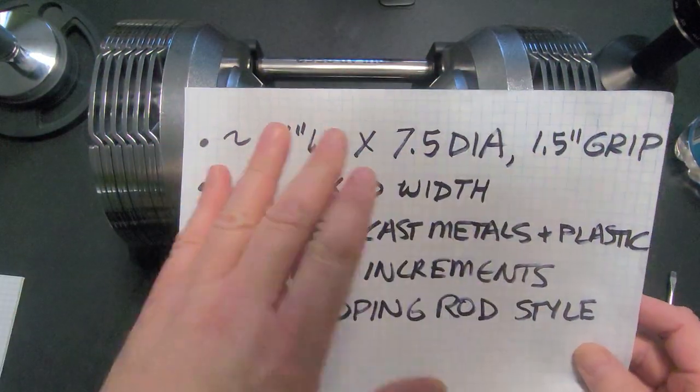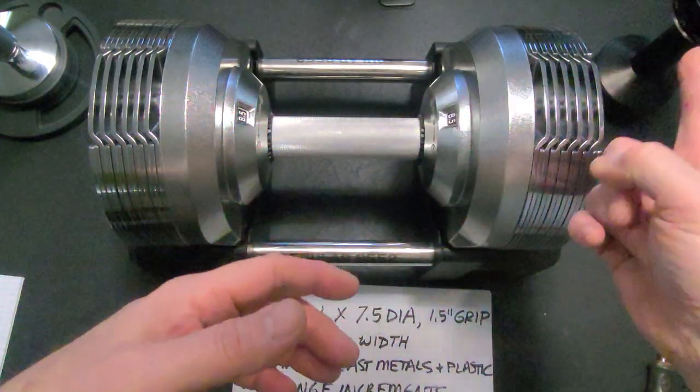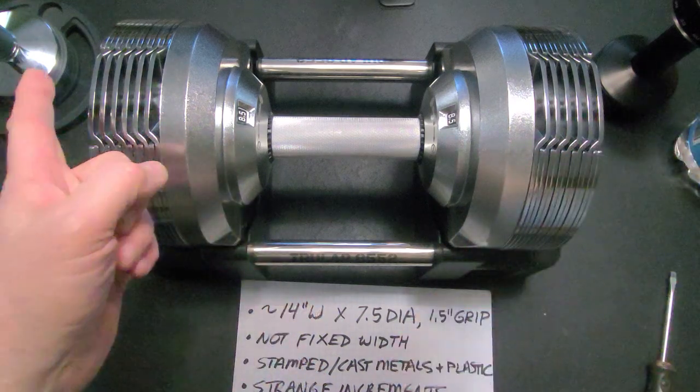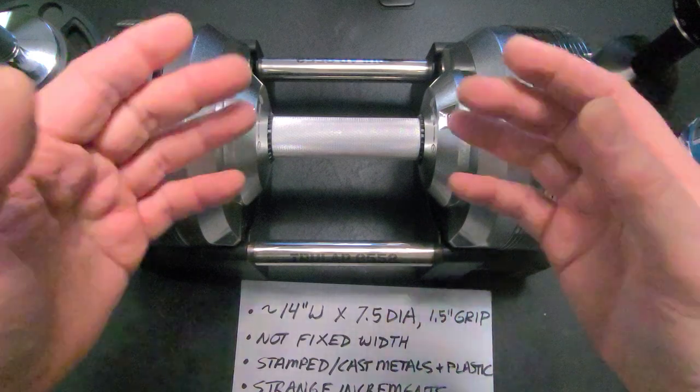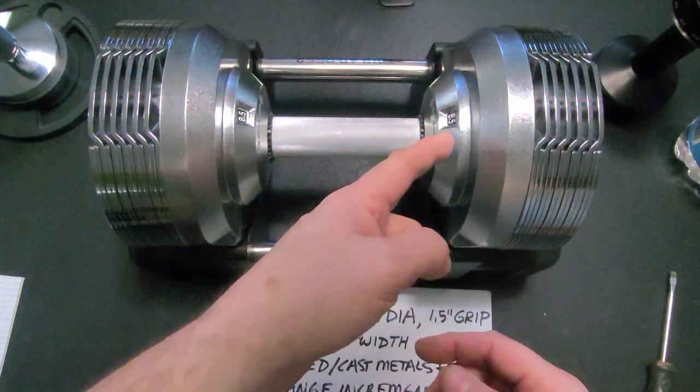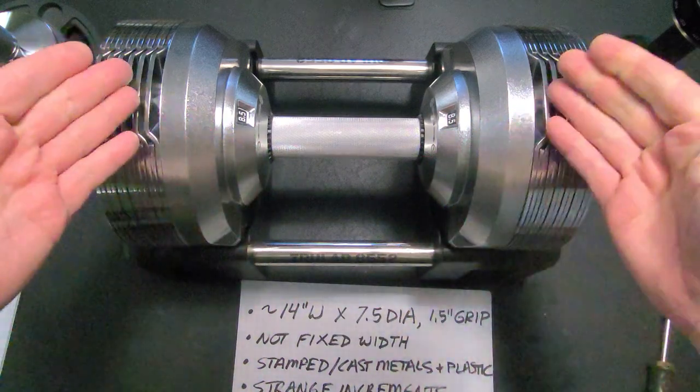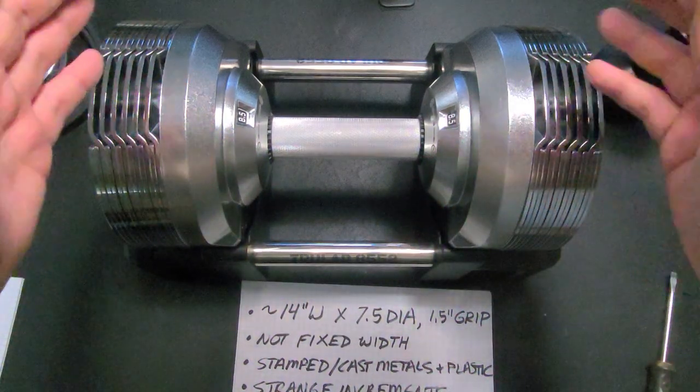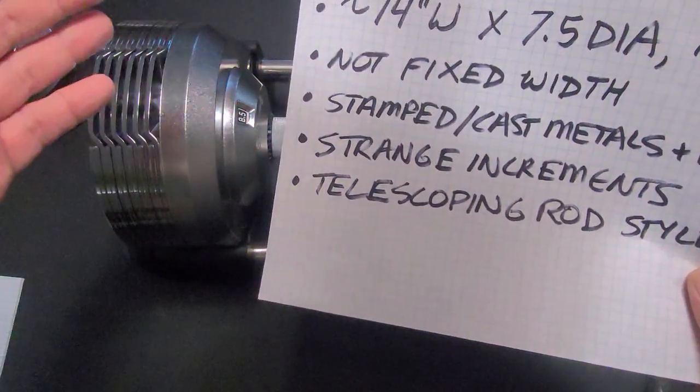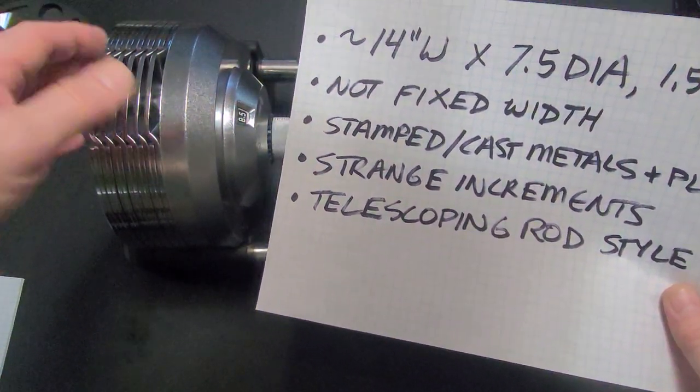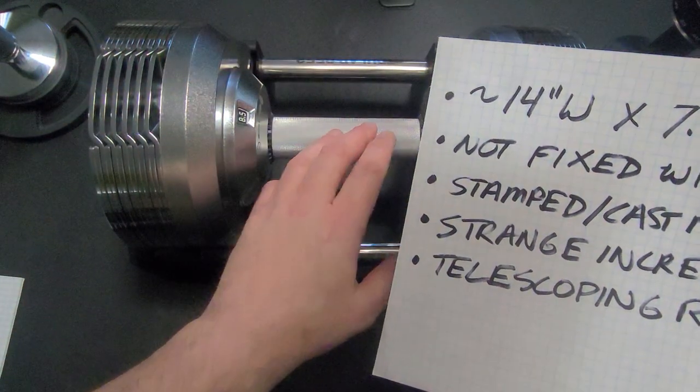It is not a fixed-width dumbbell. It uses telescoping rods. So, much like the Newell Bells over here and the Snodes over here, the width of this dumbbell depends on the weight setting. The telescoping rods extend and retract to pick up or leave behind the weights depending on what you set. It's made of stamped steel plates, cast metal ends, a knurled grip.